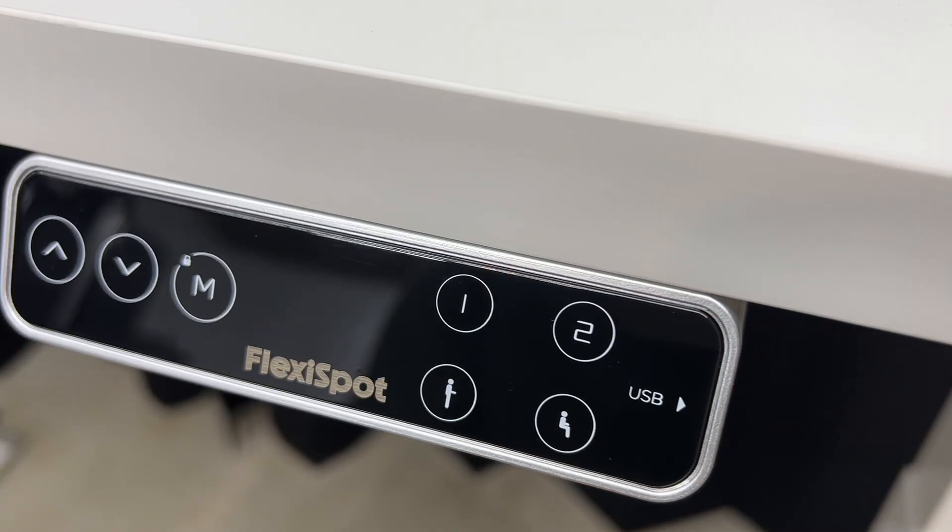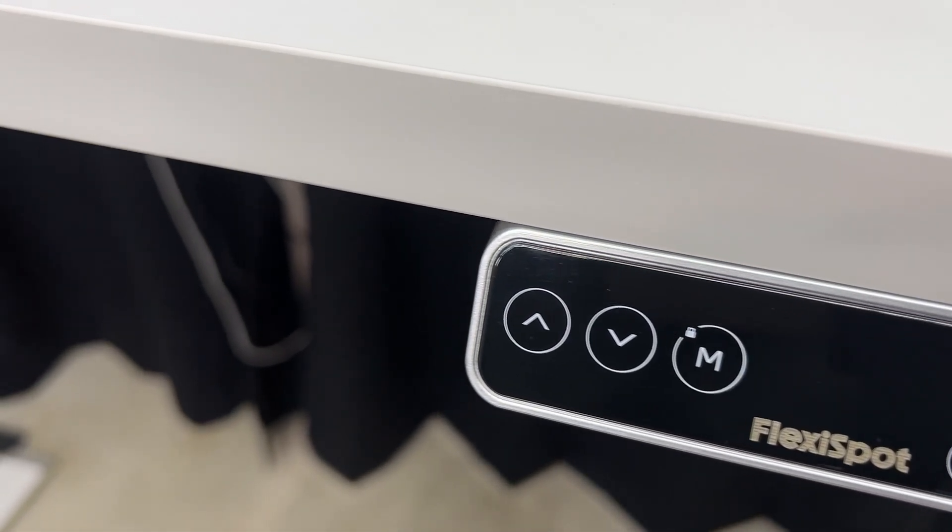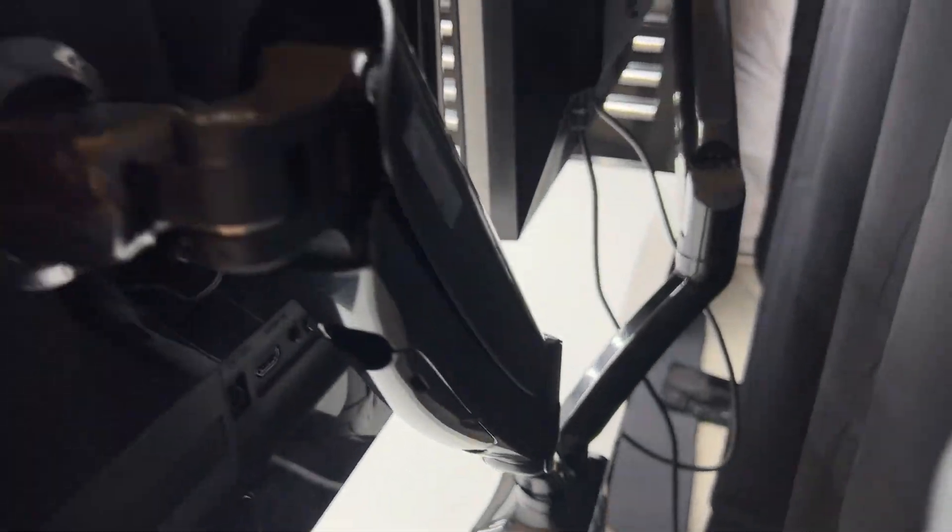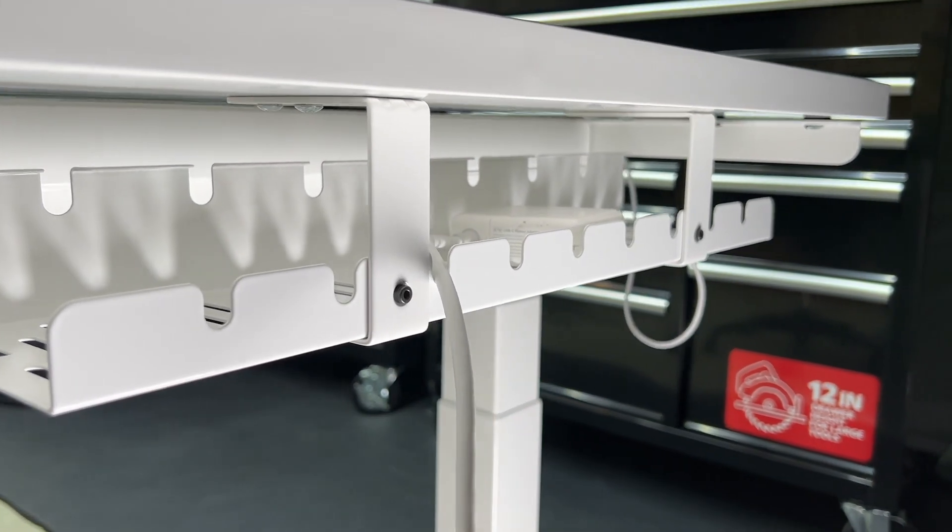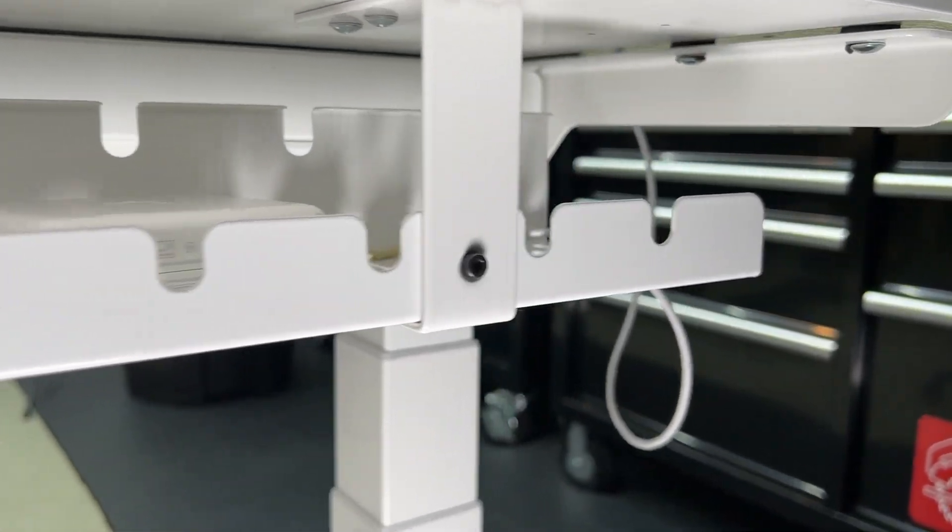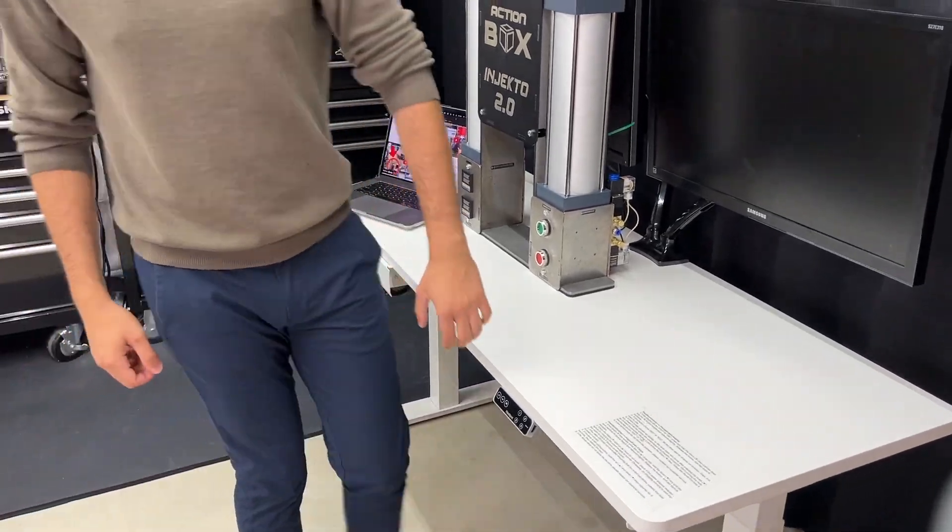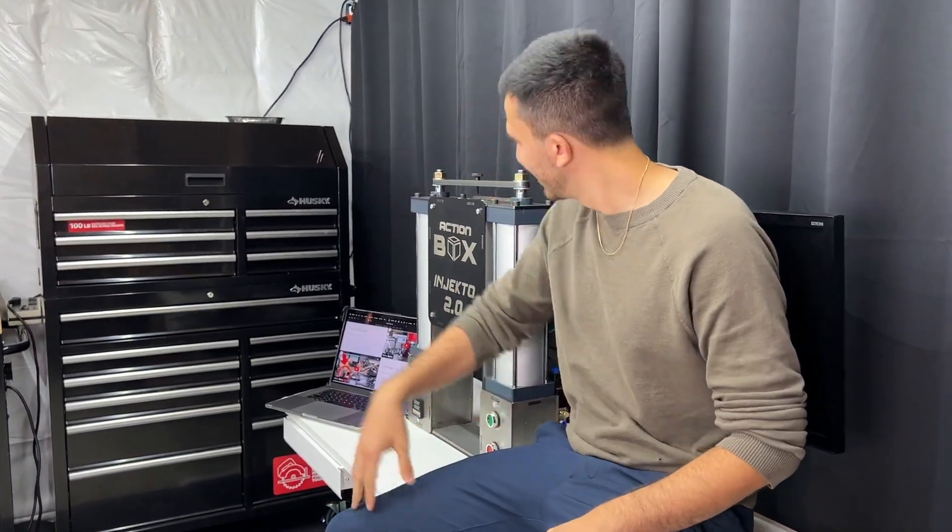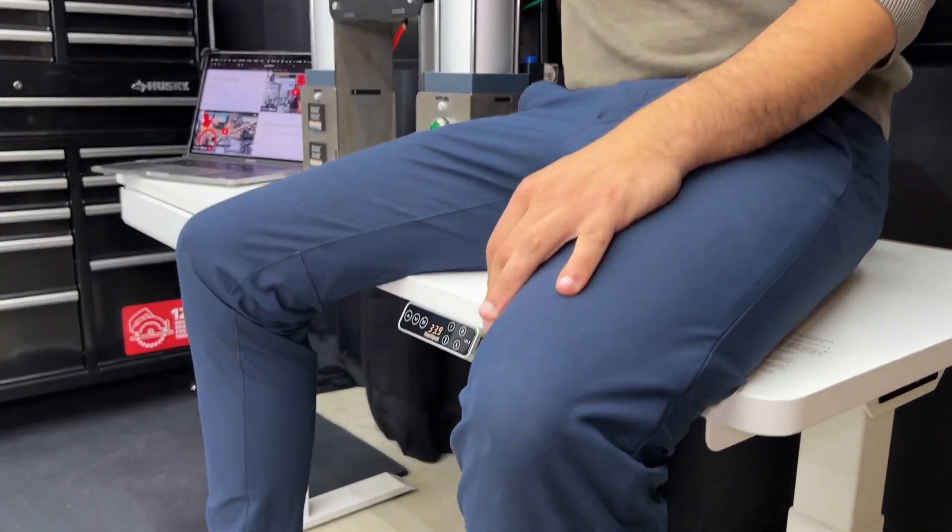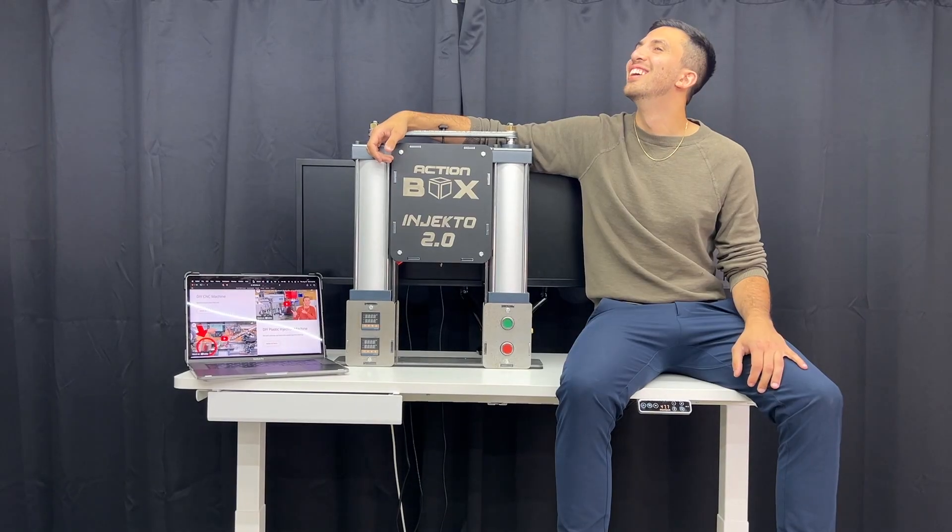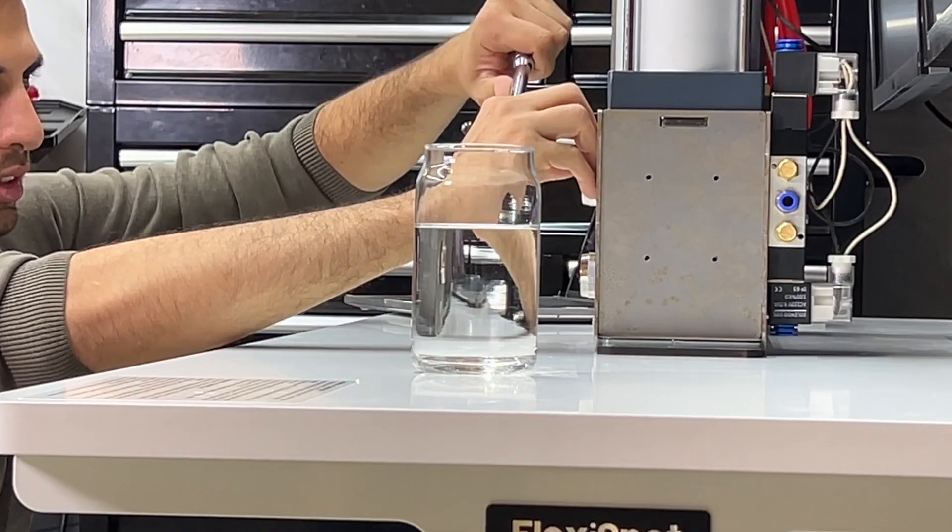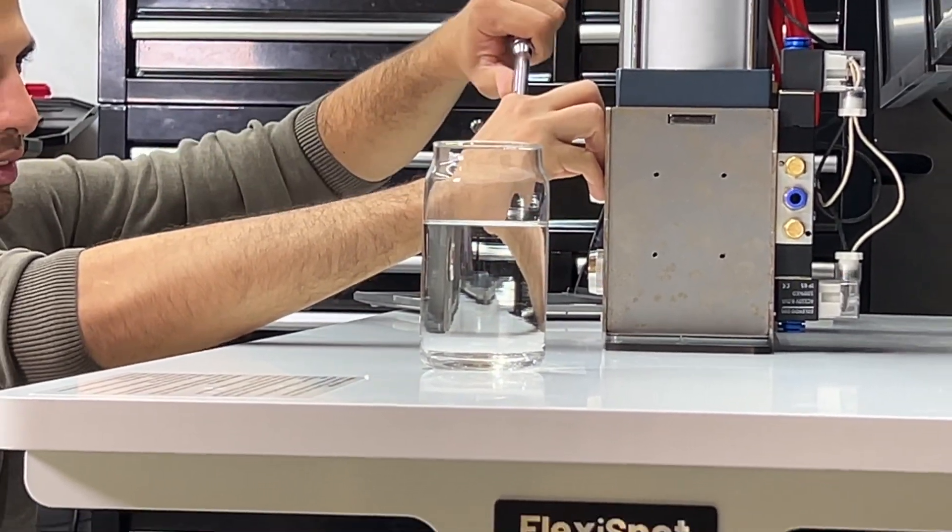The E7 features a sleek programmable control panel, and we also got the add-ons like this slim under desk drawer, this sturdy dual monitor arm, and a cable management tray for all those messy wires. Another great benefit of this desk is its affordable price. This desk can support up to 440 pounds with an uplift weight capacity of 335 pounds. This means it can support Injecto and myself while we can remain confident that the surface will stay steady. Just look at how still this glass of water remains as we work on the desk.